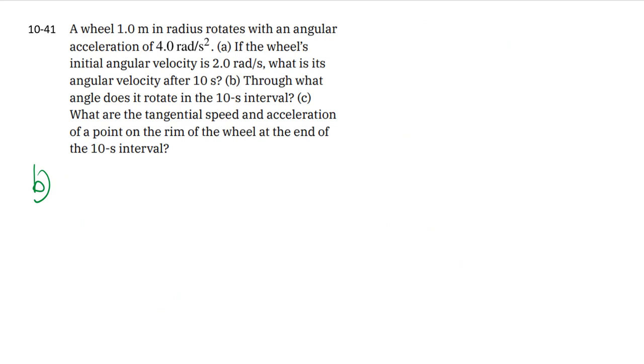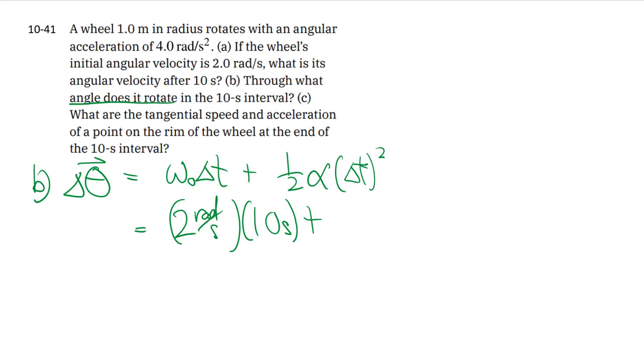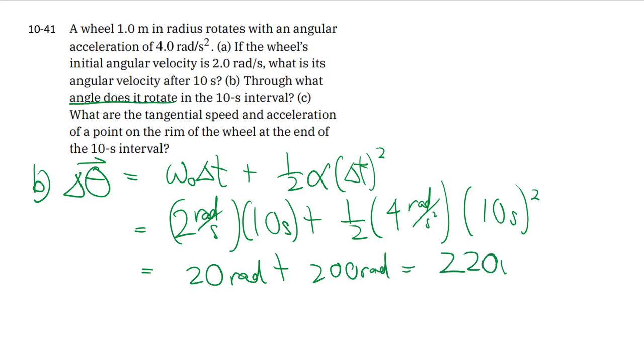Part B, they're asking about what angle does it rotate, so that's our angular displacement. We can use this kinematics equation, your V0T plus 1/2 AT squared. And we have all this information, so it's just a matter of subbing it in. The units become radians. You have 20 radians plus 200 radians, giving a total of 220 radians.